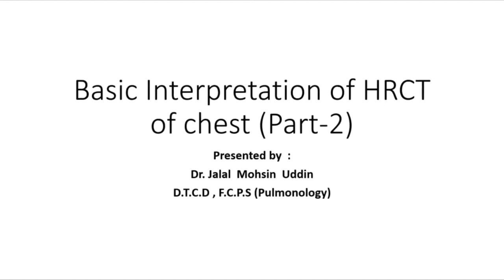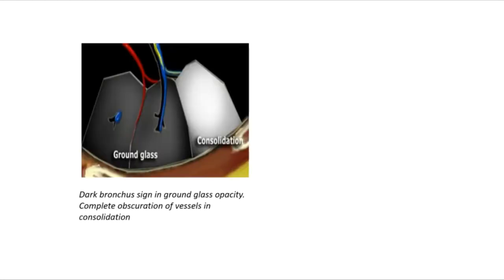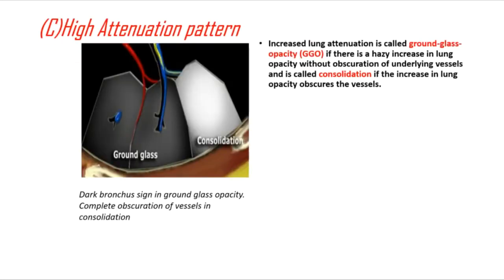Basic interpretation of HRCT of chest, Part 2, presented by Dr. Joel Mochsin Udin DTCD FCPS Pulmonology. High attenuation pattern: increased lung attenuation is called ground glass opacity (GGO) if there is a hazy increase in lung opacity without obscuration of underlying vessels.